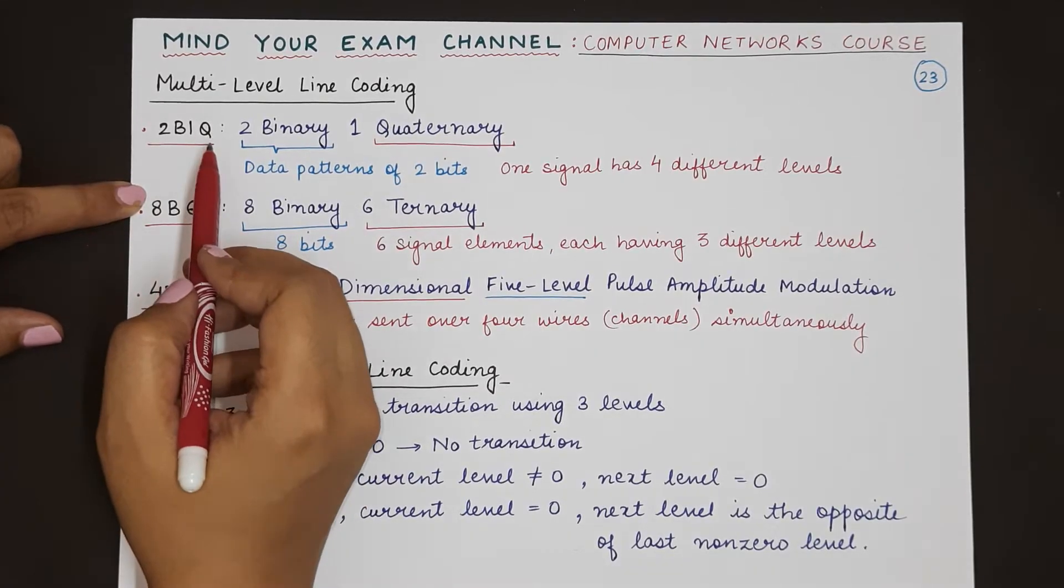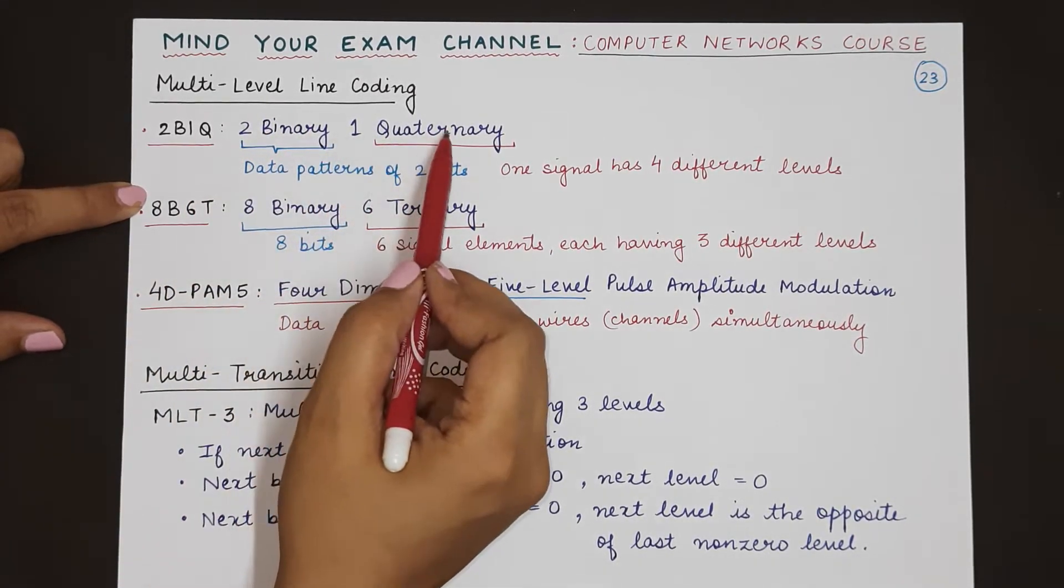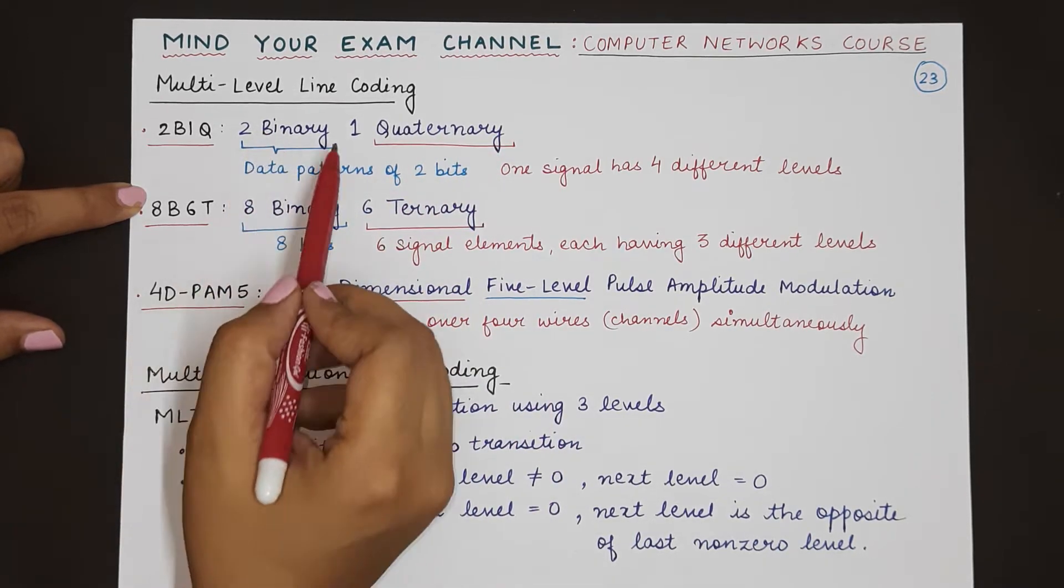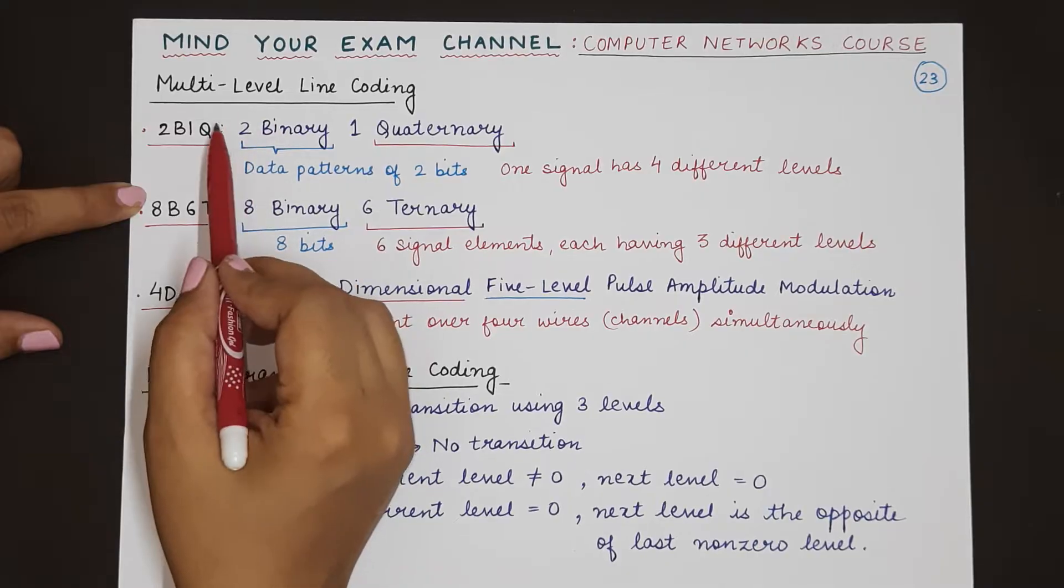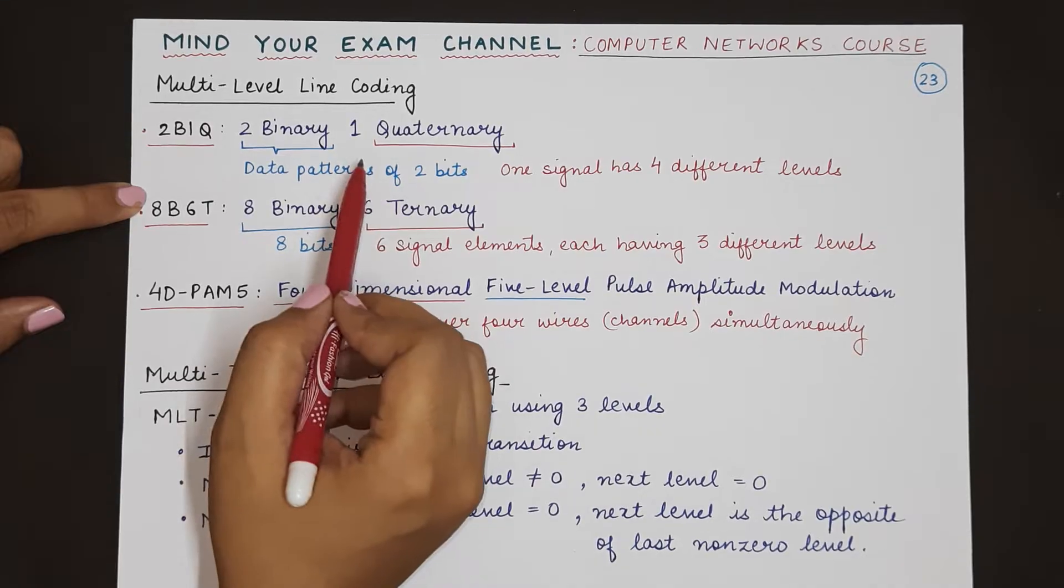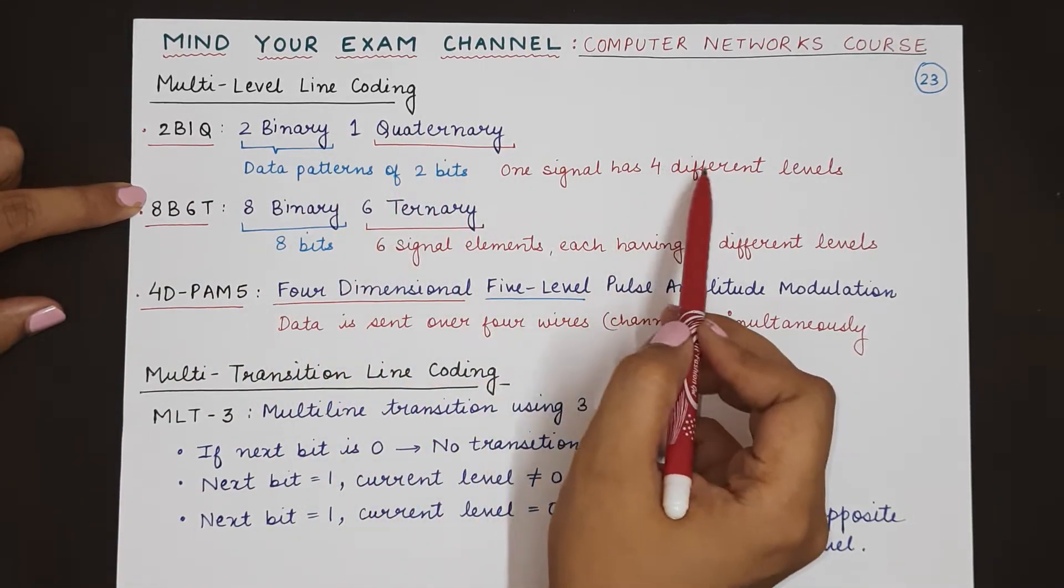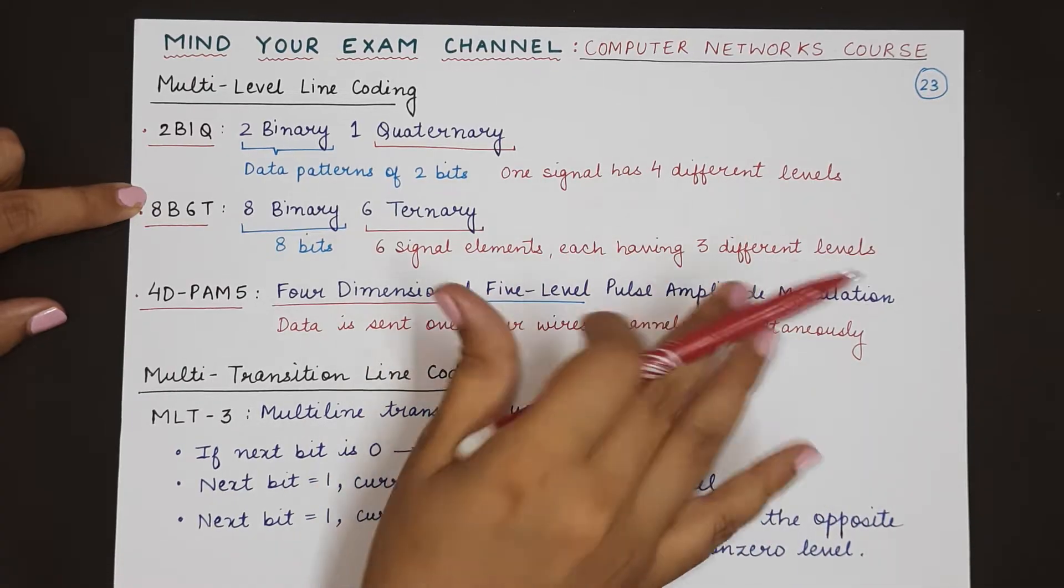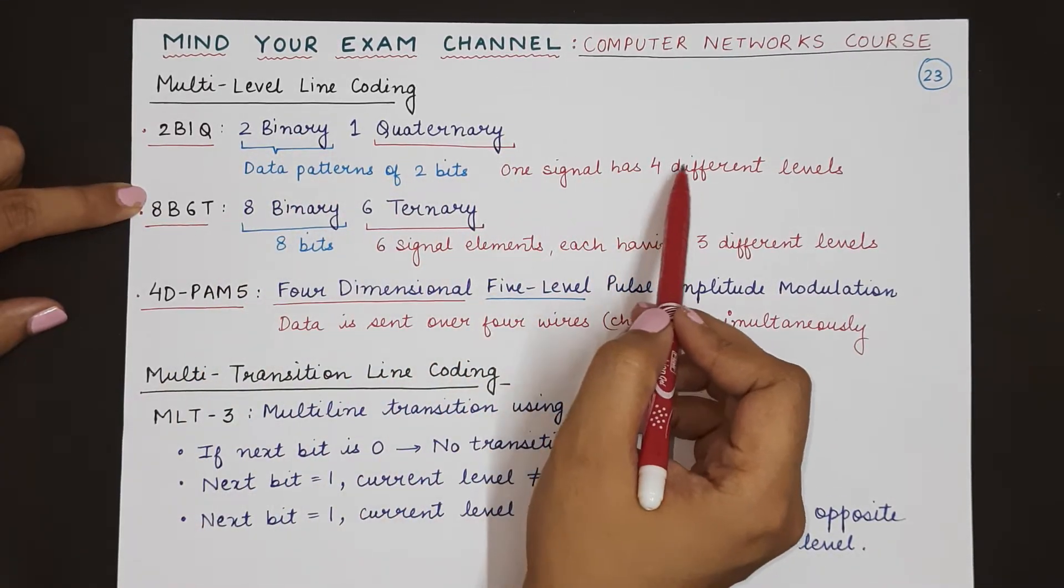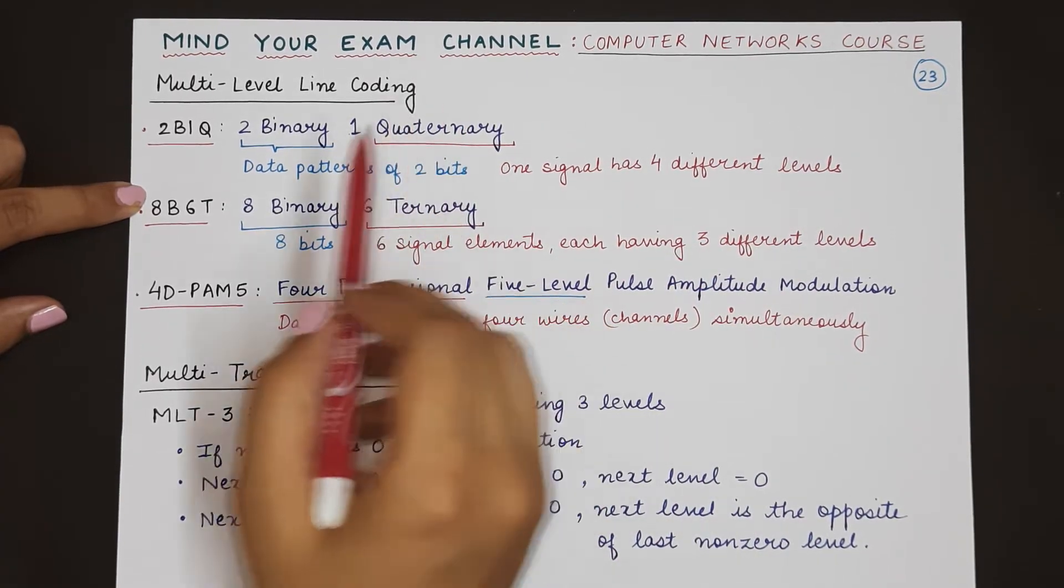2B1Q basically means two binary and one quaternary. That means there will be binary patterns each having two bits. The data patterns will have two bits each and there will be one signal that has four different levels. So the two bit patterns will be represented by four different levels in a single signal.